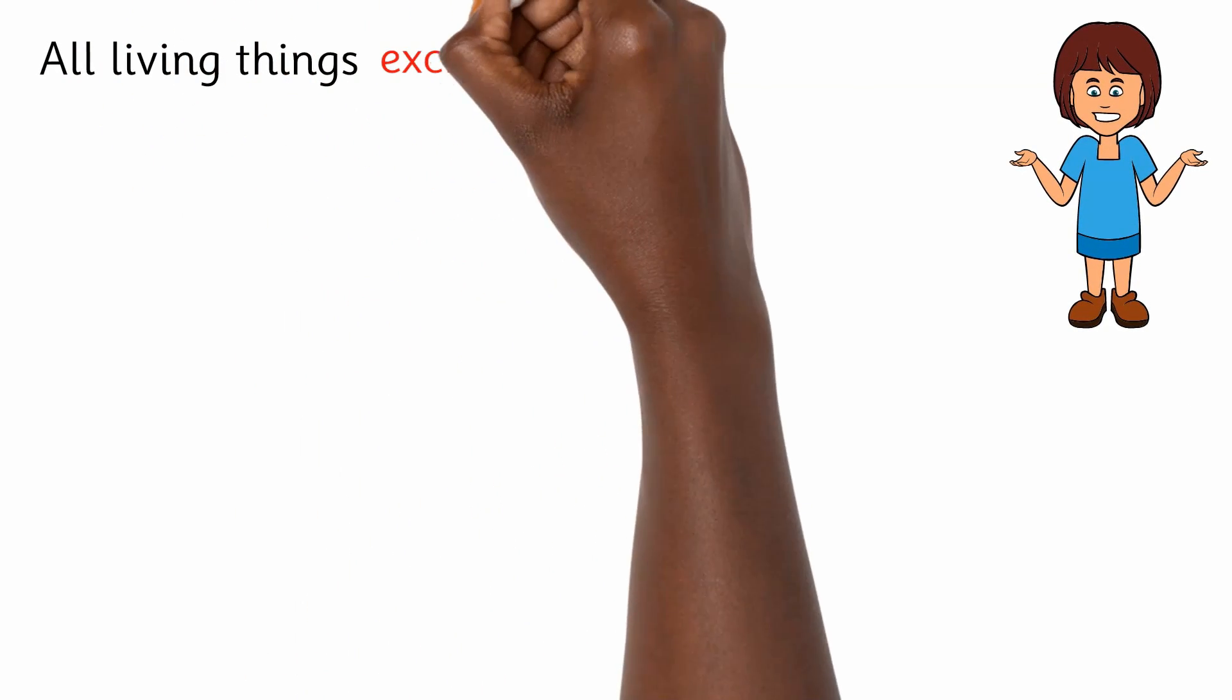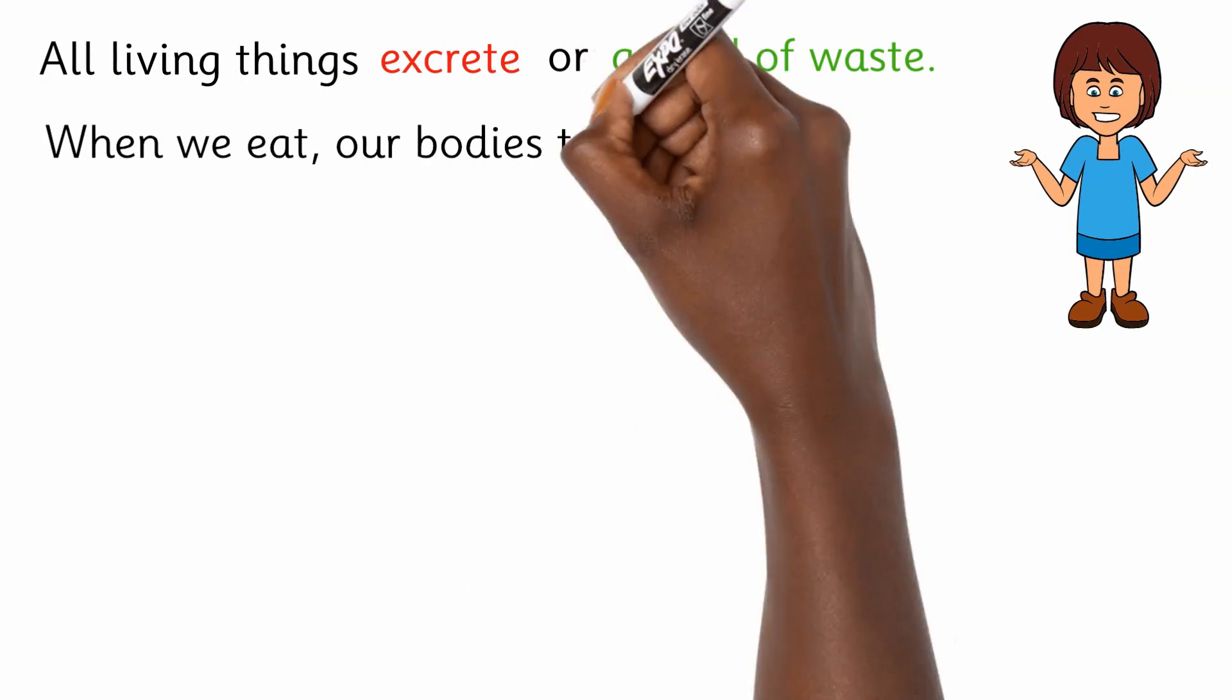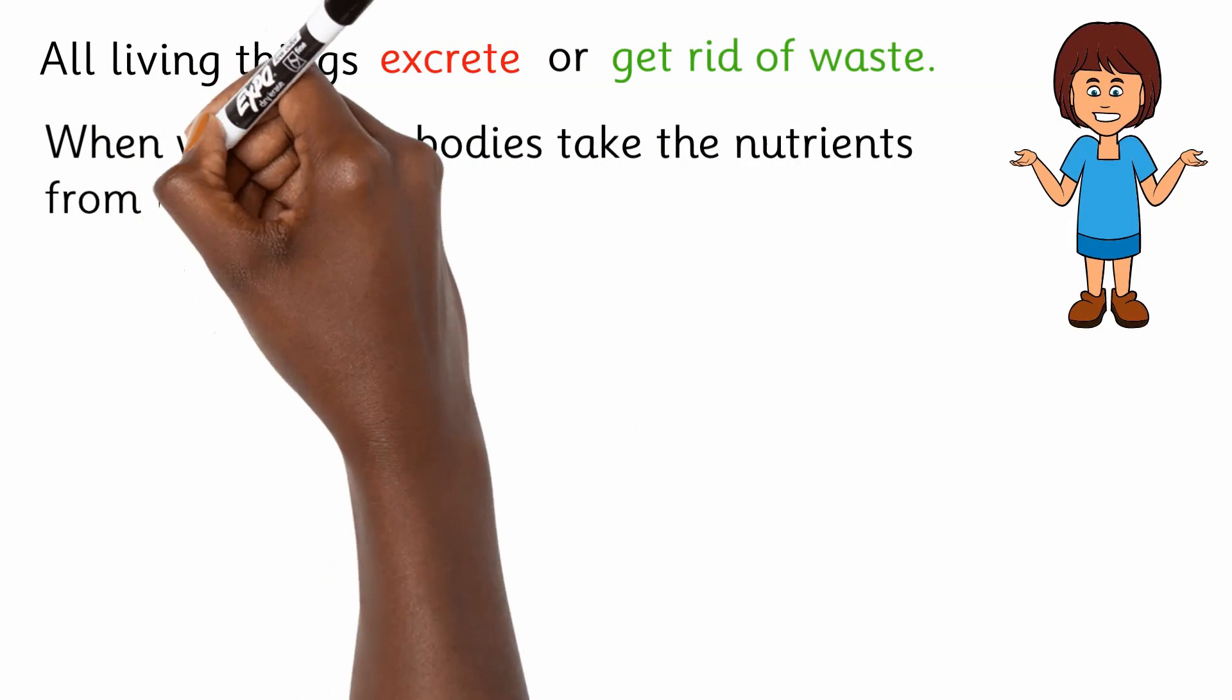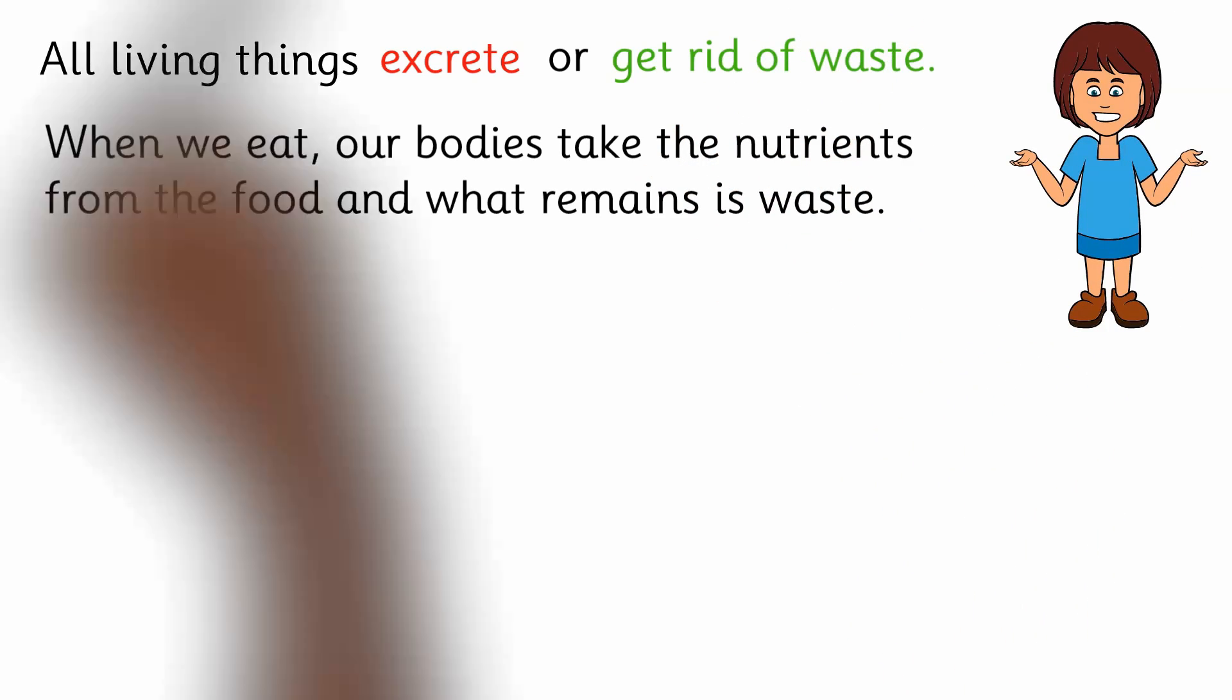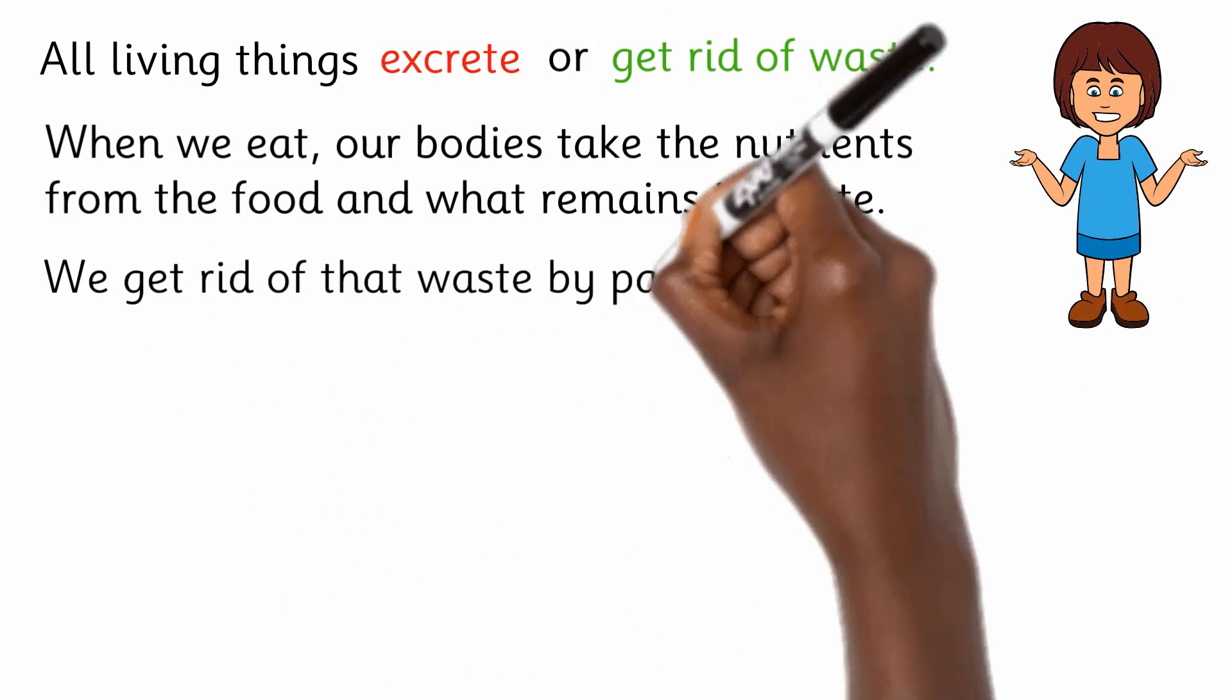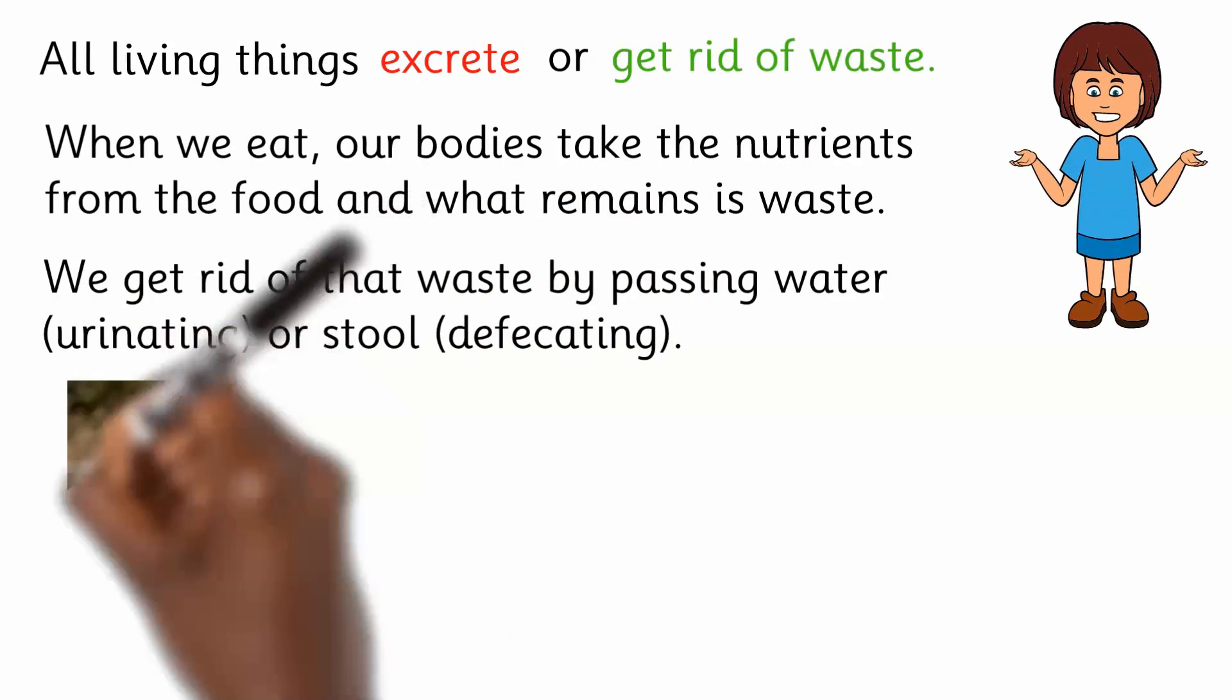All living things excrete or get rid of waste. When we eat, our bodies take the nutrients from the food, and what remains is waste. We get rid of that waste by passing water (urinating) or stool (defecating).